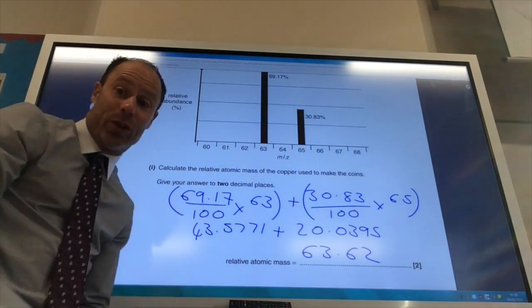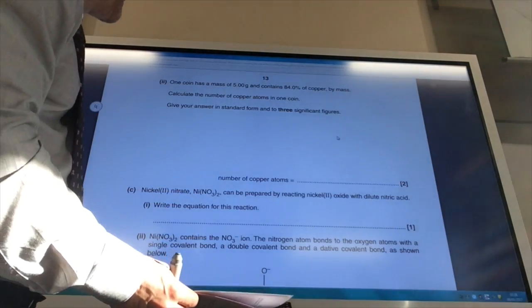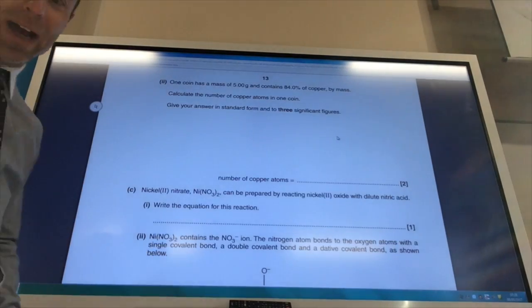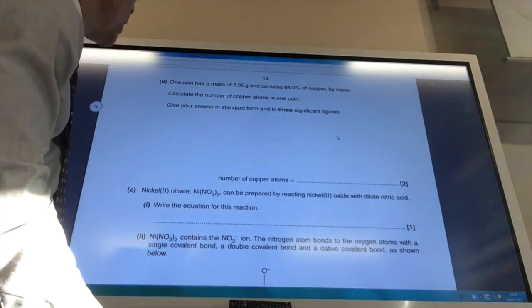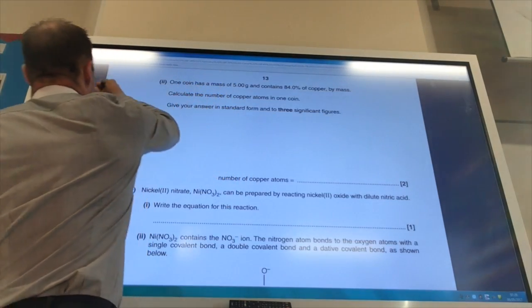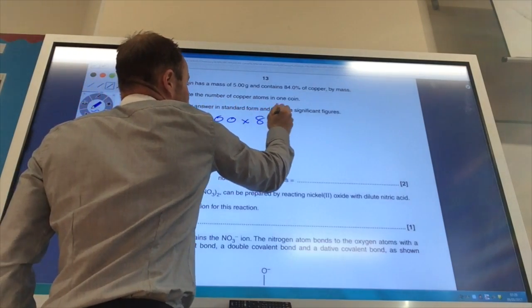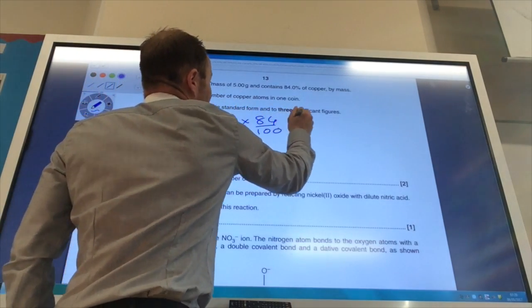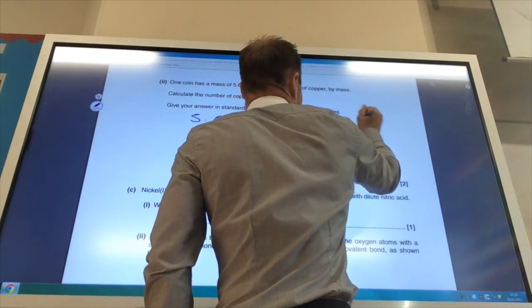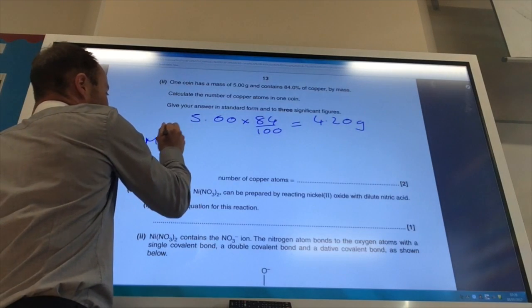So one coin has a mass of 5 grams and contains 84% copper. And they want me to find the number of copper atoms in one coin. So first of all, you've got your 5 grams of coin. But only 84% of it is copper. So we find 84% of 5. That gives you 4.20 grams.